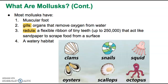Another trait that most mollusks share is that they live in water. If they don't live in a body of water itself, they need to live near water — in an area that's marshy or usually damp. Clams, snails, squids, oysters, scallops, and octopi are all examples of mollusks that you can see in the picture on the screen.